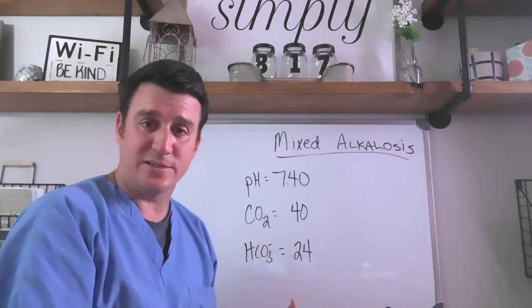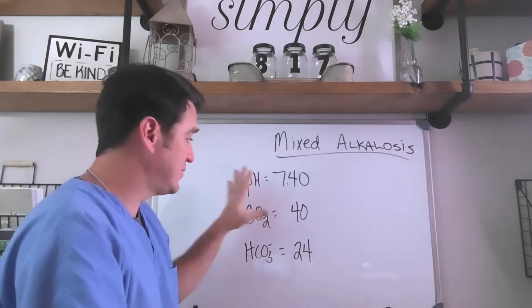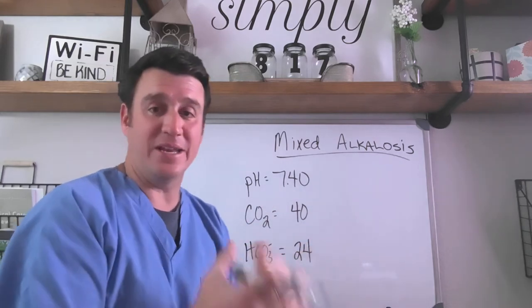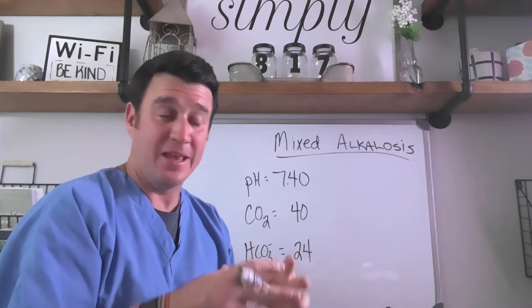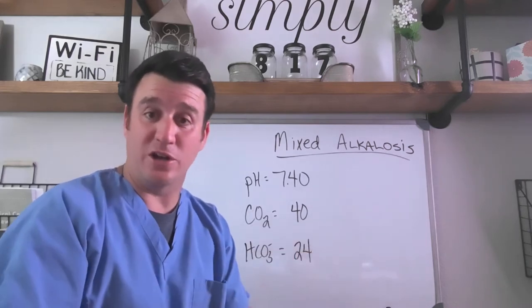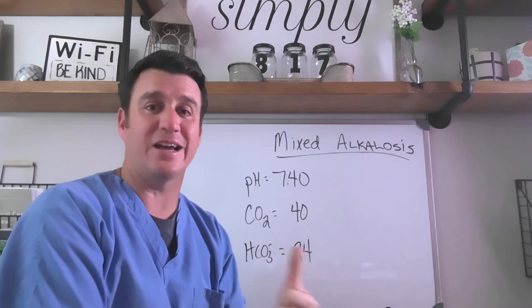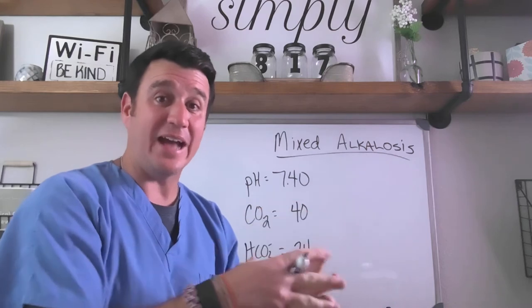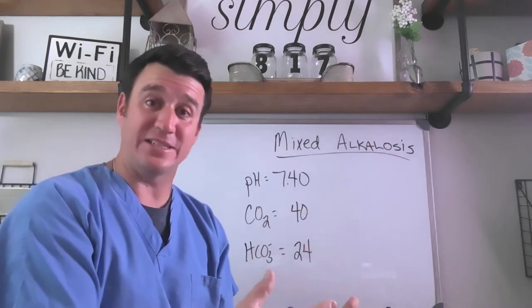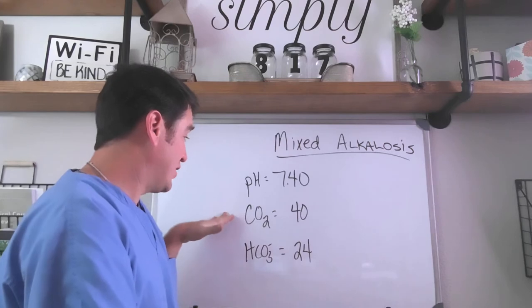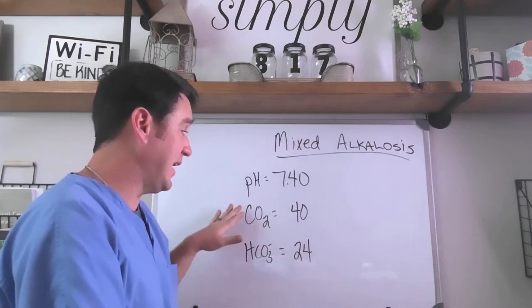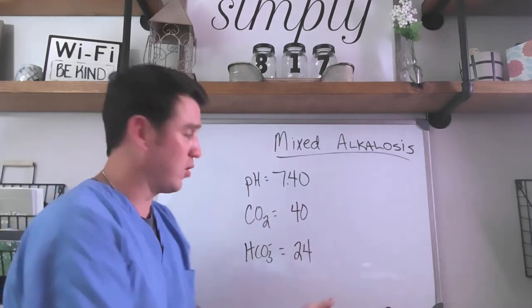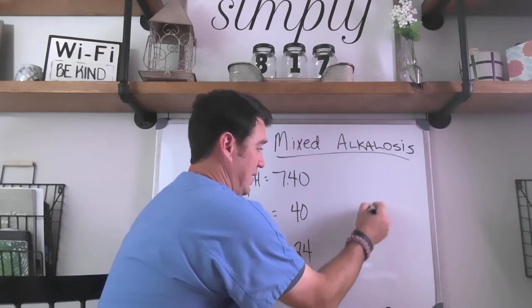This is a normal blood gas. There are no disturbances present right now, but when we see a combination of disturbances that both are going to cause an alkalosis, so your respiratory component is going to cause an alkalosis and your metabolic component is going to cause an alkalosis, that's where we end up with a mixed alkalosis. Remember, in regards to the respiratory component, an alkalosis will be caused when CO2 goes down beneath normal.